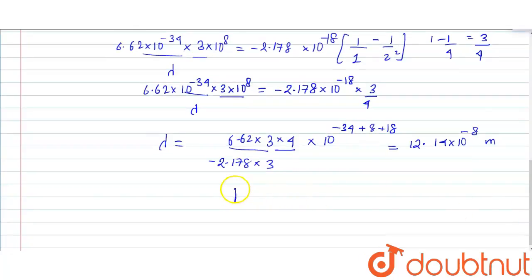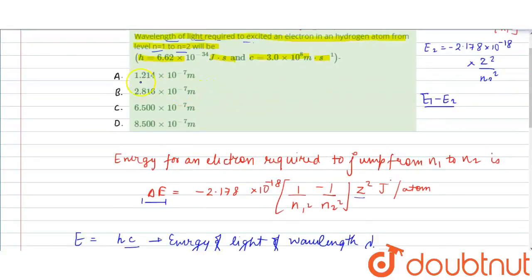This can be written as lambda equals 1.214 times 10 to the minus 7 meter. This is the answer. If you see the options, it is option A. The answer is option A. Thank you.